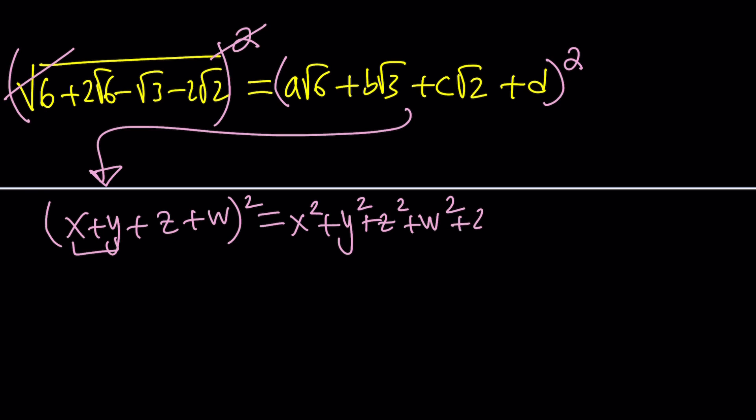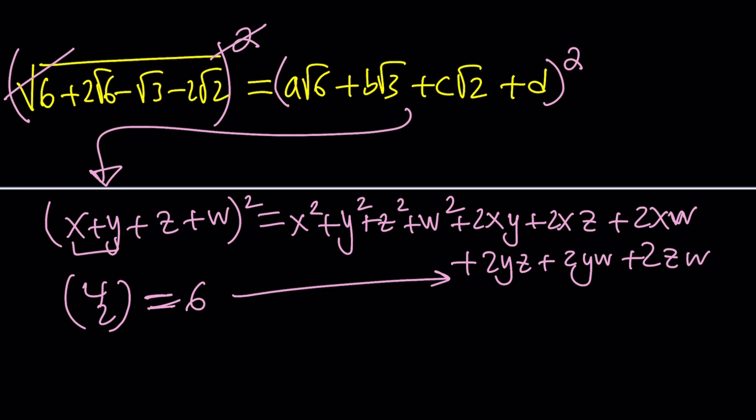It's going to look like plus 2xy plus 2xz plus 2xw and then you have to do all the pairs plus 2yz plus 2yw and finally plus 2zw. You do need to write six terms because it's 4 choose 2, and as you know from counting, it's supposed to be six.